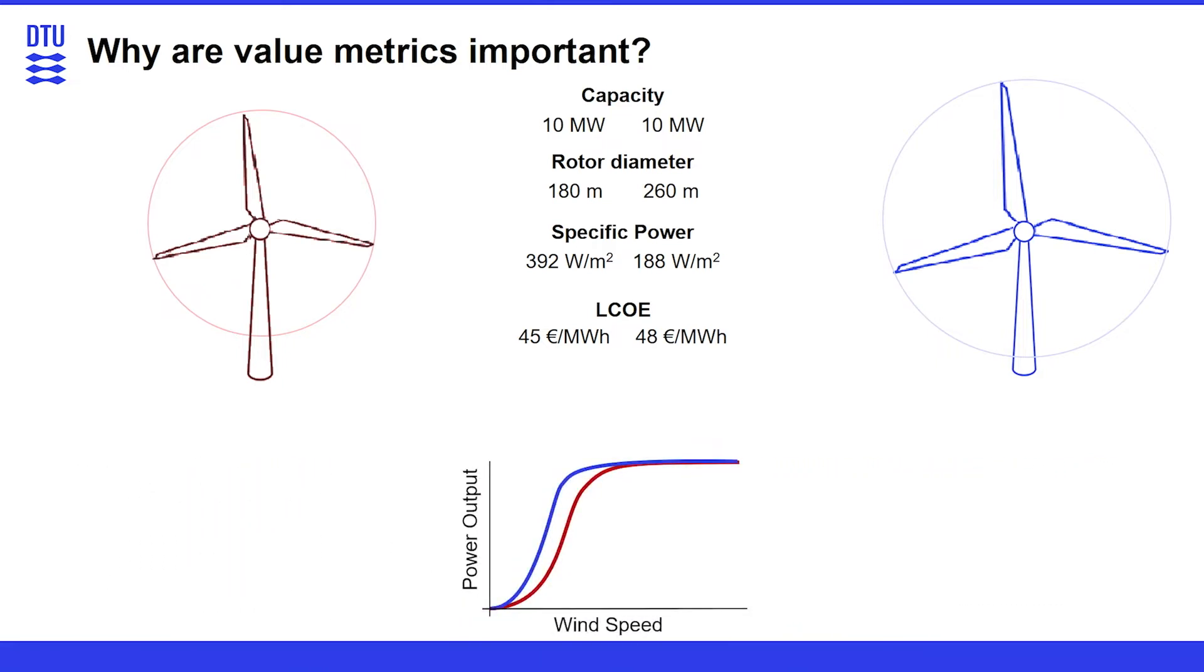But when we look into the power output of the two turbines, you can see that the larger swept area gives us a larger energy yield in the lower wind speed areas.